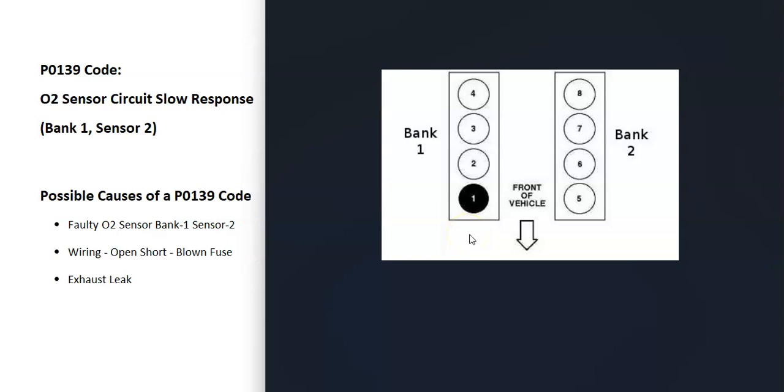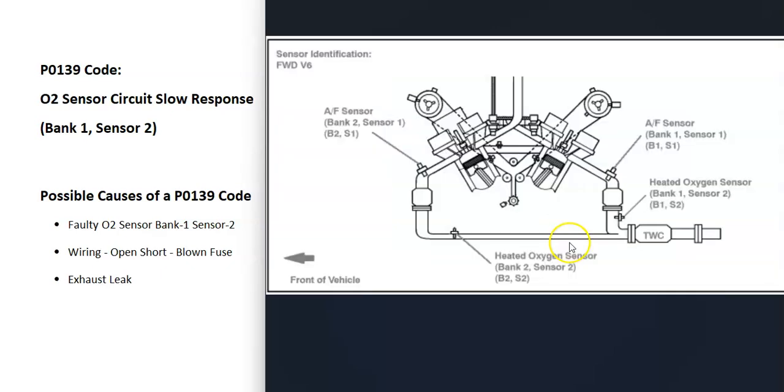If you have a four cylinder engine, it doesn't matter because you only have one bank. It's a good idea to get a diagram showing where all the sensors are located on your particular vehicle. It makes things easier to know where everything's at.